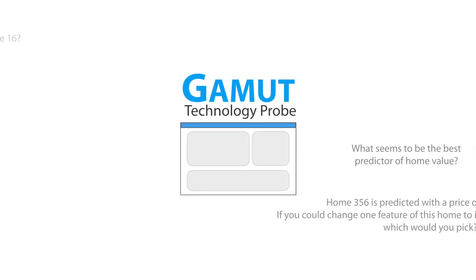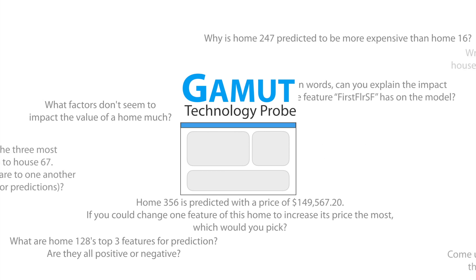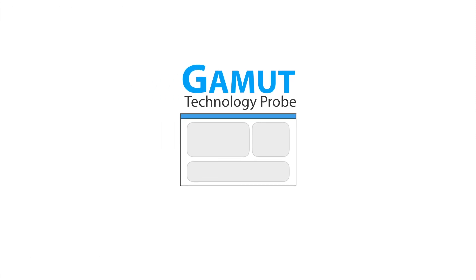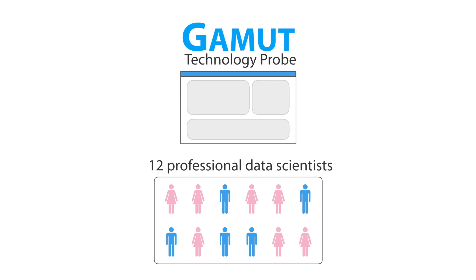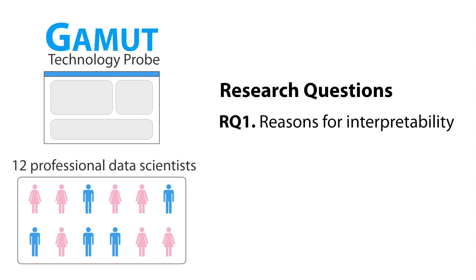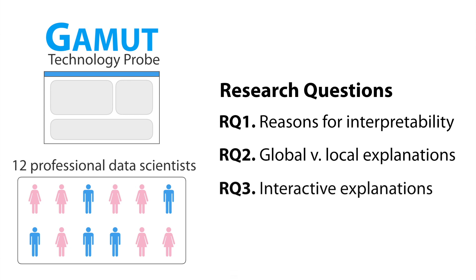Using Gamut as a design probe, we performed an in-lab user study to understand how data scientists use interpretability to answer questions about models and predictions. We selected 12 professional data scientists at a large technology company and invited them to use Gamut on a variety of different datasets. We had three main research questions: Why do data scientists need model interpretability and how do they use it? Do data scientists prefer global or local explanations? And what is the role of interactivity for model exploration and understanding? Our investigation showed that interpretability is not a monolithic concept. Data scientists have different reasons to interpret models and tailor explanations for specific audiences, oftentimes balancing competing concerns of simplicity and completeness.